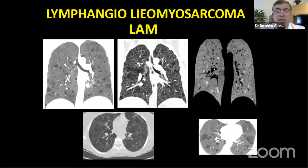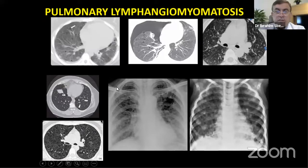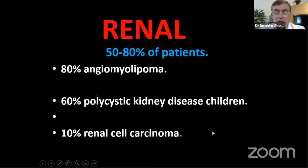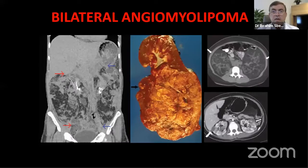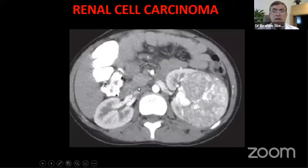In the lungs, lymphangioleiomyomatosis can be seen on X-rays and CT scans. Regarding the kidneys, 50 to 80% of patients have renal disease, which is also a killer. Presentations include angiomyolipoma, polycystic kidney disease, or renal cell carcinoma. Bilateral angiomyolipoma is very bad and almost incompatible with life.